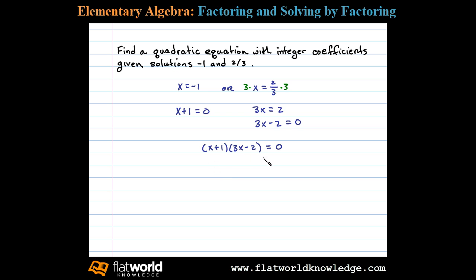From this we can determine a quadratic equation with -1 and 2/3 as solutions. All that's left is to multiply this out and present our solution in standard form. x times 3x is 3x², x times -2 is -2x, 1 times 3x is +3x, and 1 times -2 leaves us with -2 = 0.